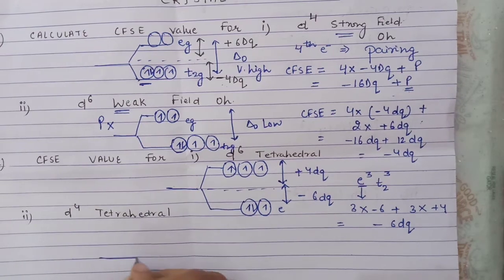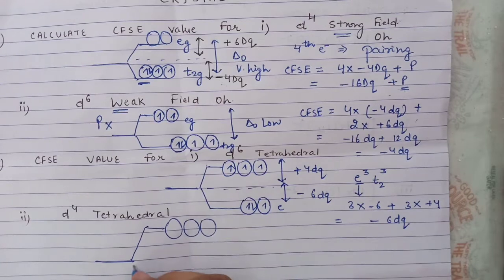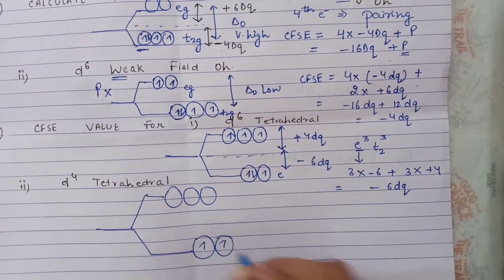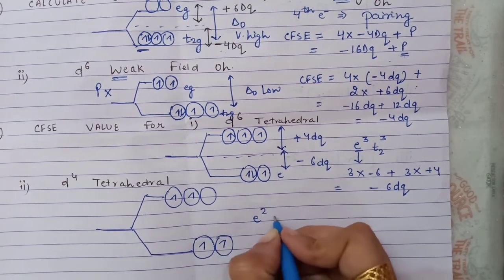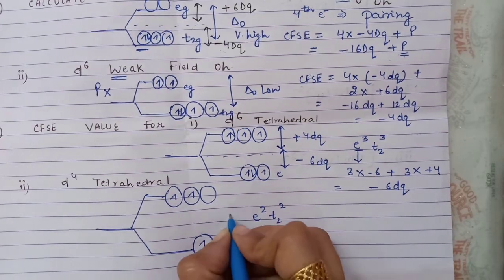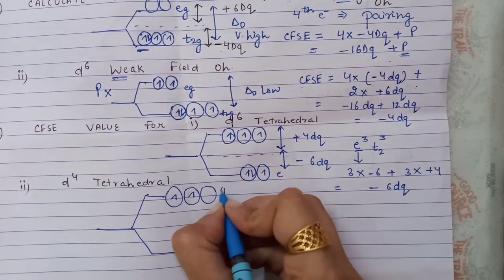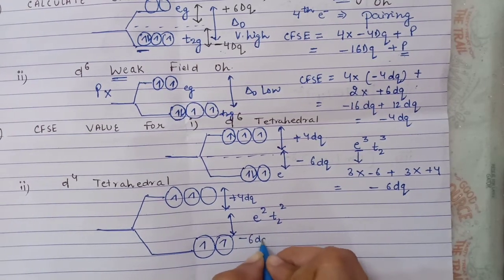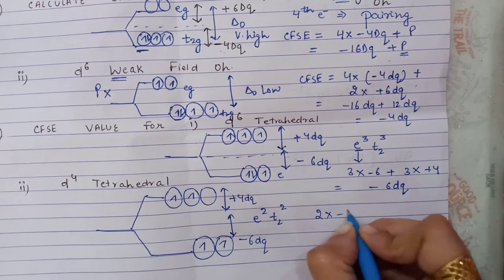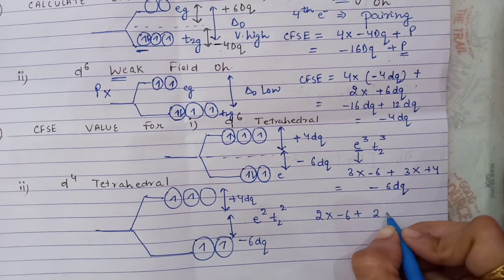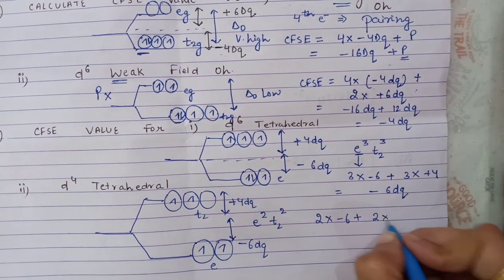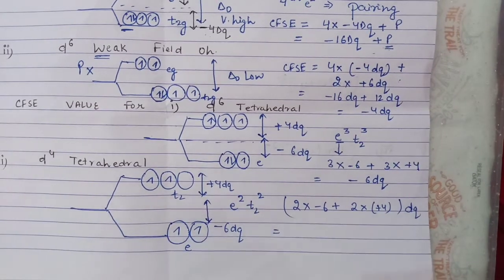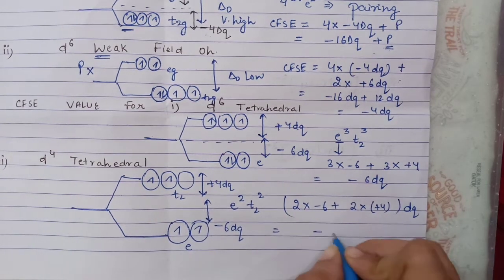Fourth question: CFSE for d4 tetrahedral. Same tetrahedral splitting pattern — T2 is higher energy and E is lower energy. Filling d4 gives configuration E²T2². CFSE = 2 × (−6DQ) + 2 × (+4DQ) = −12DQ + 8DQ = −4DQ.